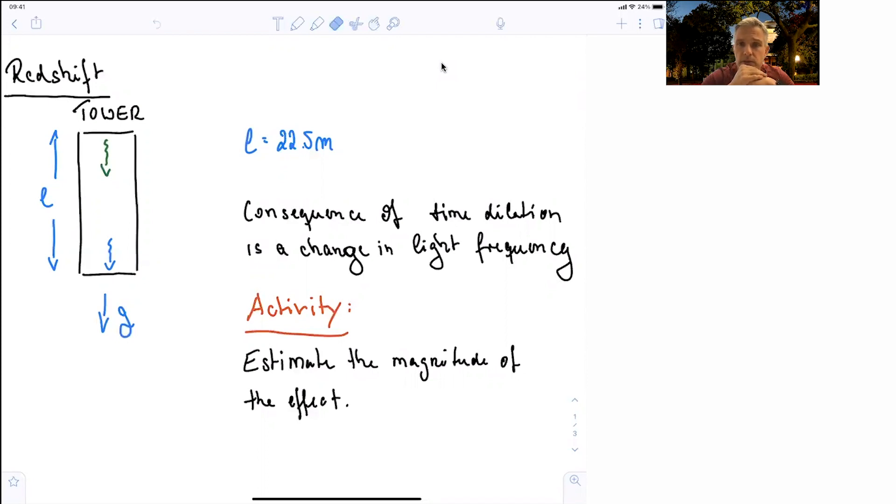A consequence of time dilation is a change in light frequency. I ask you to estimate the magnitude of this effect. The example you want to use is the one shown here.